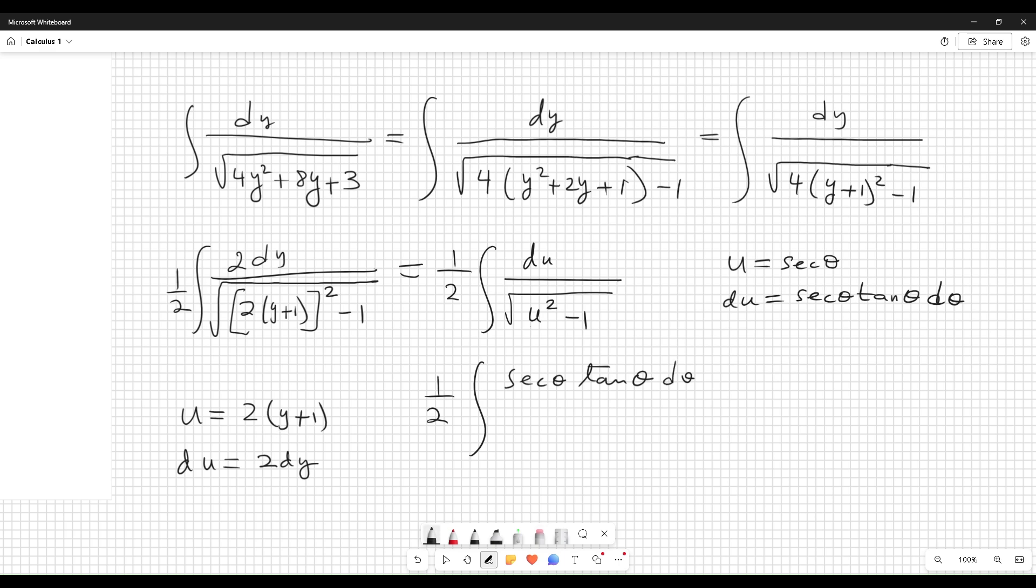And in the denominator, one-half times the square root of u squared, which equals secant squared theta minus 1. But this is tangent squared, and the square root of this is tangent. This tangent cancels with this tangent.